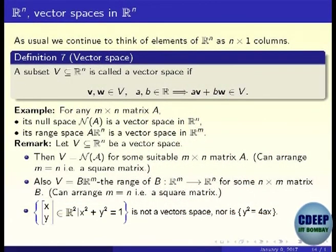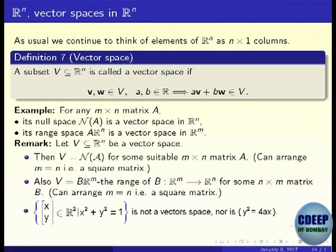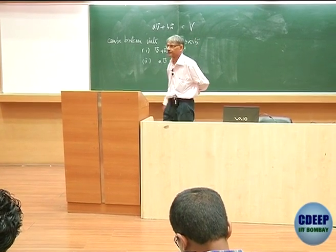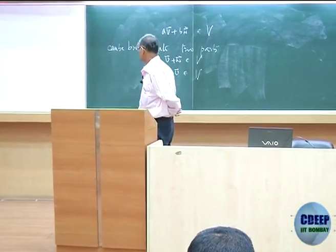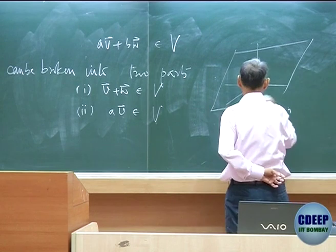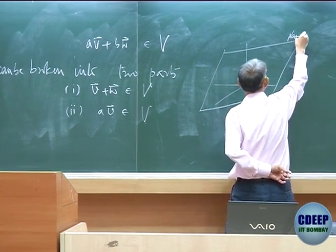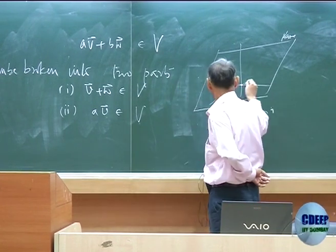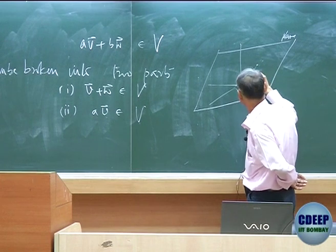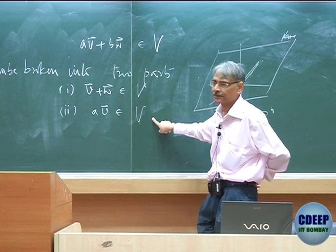These are the 'flats' I was talking about. We will first do the formal definition, then a little geometry to understand why vector spaces are flat spaces passing through the origin. First of all, the origin must be in V: if V is non-empty and any vector is in V, then 0 times that vector must also be in V by the hypothesis. So origin must be in V — it must pass through the origin.